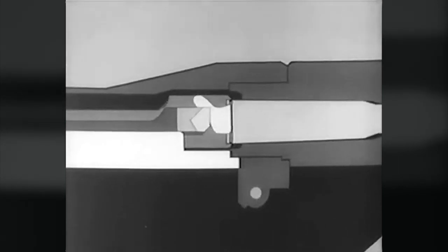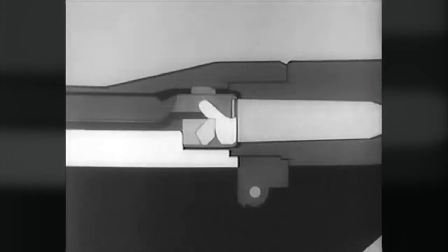The left operating lug cams against a small surface in the receiver, withdraws the bolt slightly, and breaks the cartridge case loose. This is called initial slow extraction.